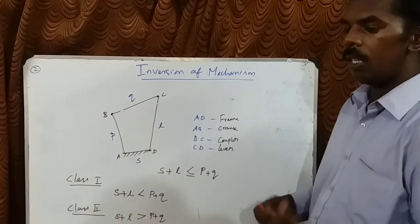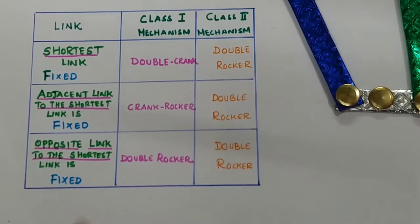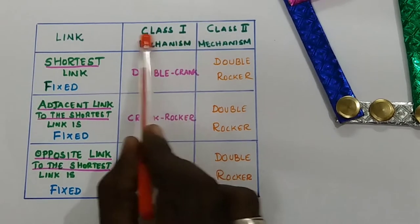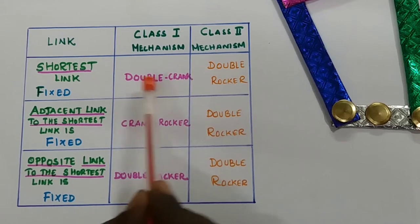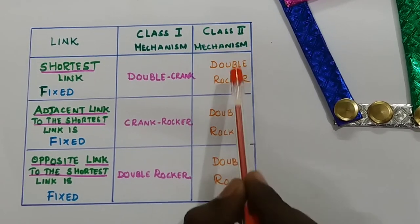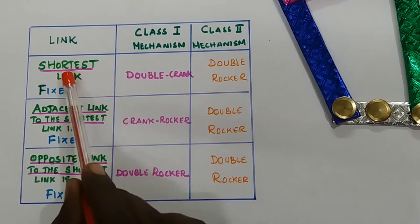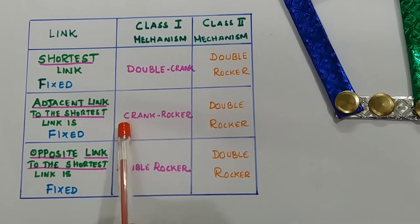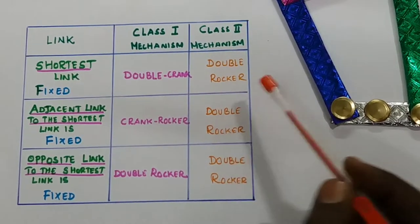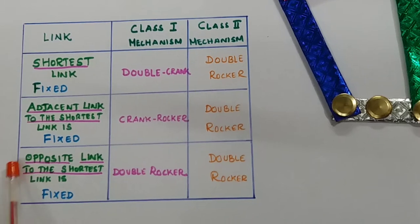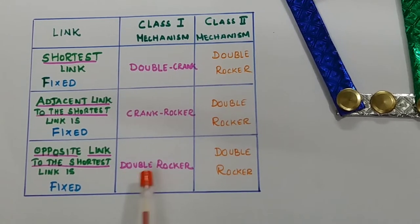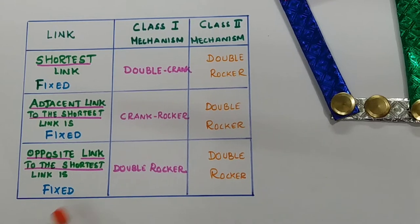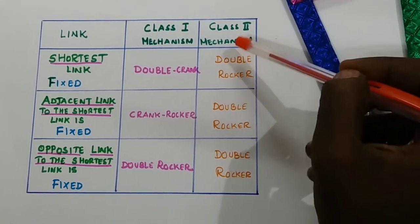Now we discuss the inversions in the 4-bar mechanism using a table. First case: shortest link is fixed — class 1 mechanism gives double crank mechanism; class 2 mechanism gives double rocker mechanism. Second case: adjacent link to the shortest link is fixed — class 1 gives crank-rocker mechanism; class 2 gives double rocker mechanism. Third case: opposite to the shortest link is fixed — class 1 gives double rocker mechanism; class 2 also gives double rocker mechanism.